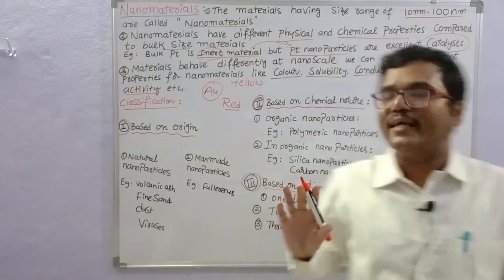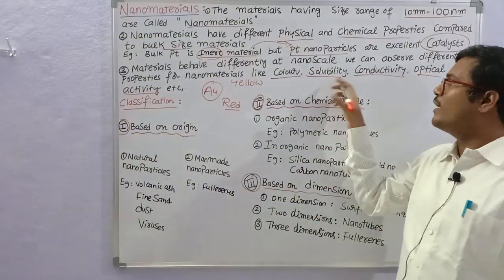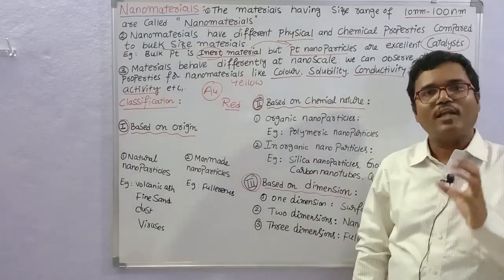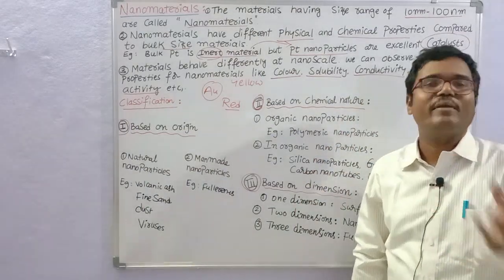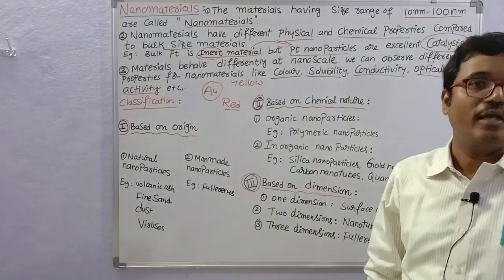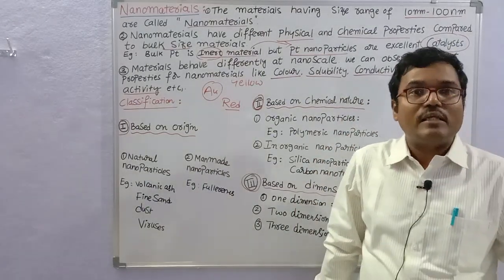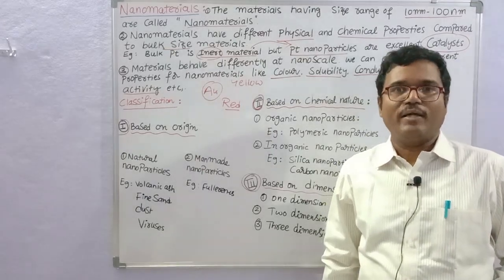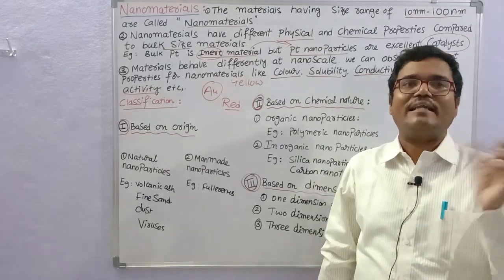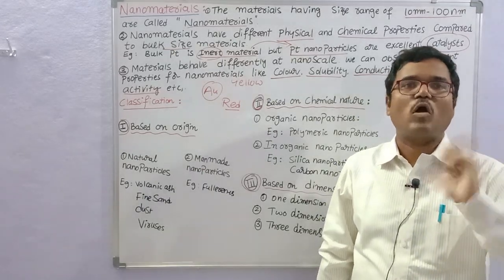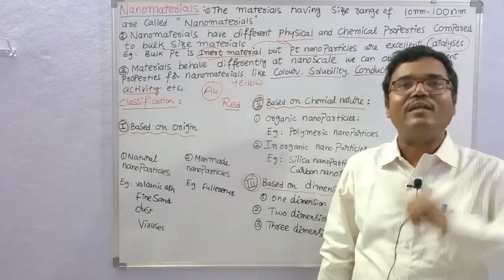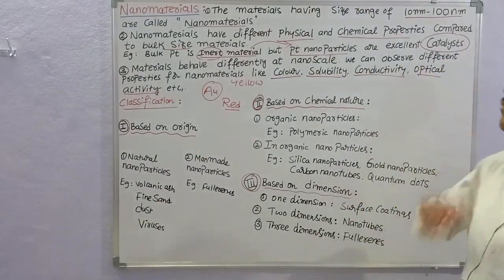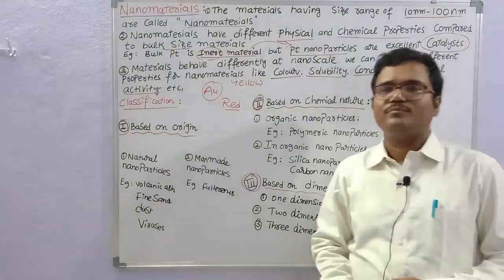Regarding conductivity: bulk materials may behave as semiconductors, whereas nanomaterials can behave as superconductors — so the electrical conductivity property changes. Additionally, optical activity, such as maximum light intensity, also differs at the nanoscale.